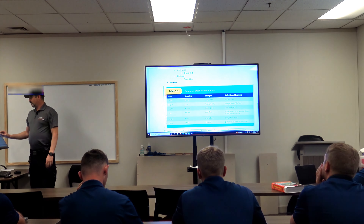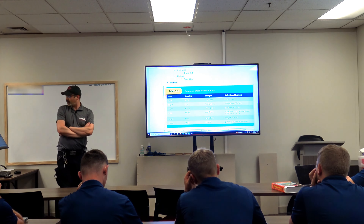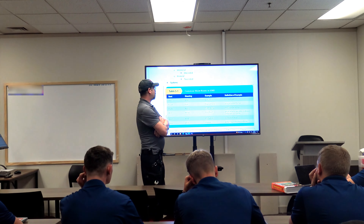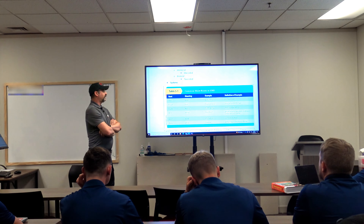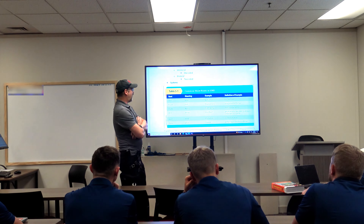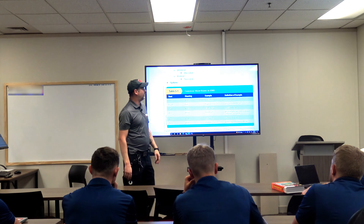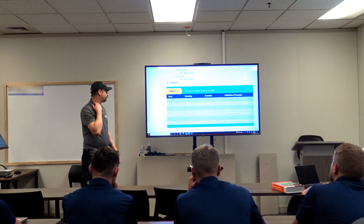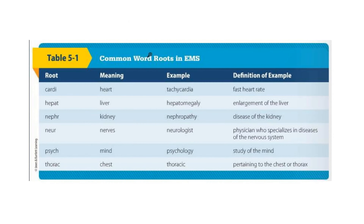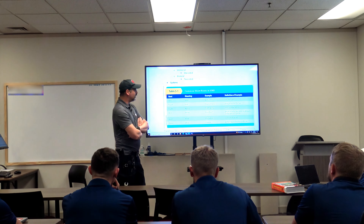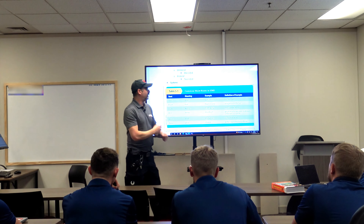As far as body systems go: cardio or cardi is the Latin term for the heart, so tachycardia means a fast heart rate. Hepato has to do with your liver — hepatomegaly means an enlargement of the liver. Nephro is your kidneys — there are nephrons within your kidneys that filter fluid from your bloodstream. Nephropathy is the disease of the kidney — pathy meaning disease.